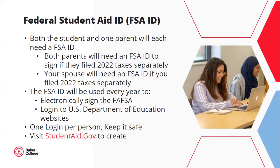One of the most important items needed to complete the FAFSA is a Federal Student Aid ID, or FSA ID. Both the student and any contributors will need an FSA ID. If parents already have an FSA ID used to complete the FAFSA for themselves or another child, they do not need to create a new one. If the student or parent doesn't have an FSA ID, please create one right away at studentaid.gov. New for the 24-25 FAFSA, an FSA ID will be required for anyone asked to provide information on a student's FAFSA. If parents filed separately, each parent will need their own FSA ID. Similarly, if an independent student and spouse filed separately in 2022, the spouse will also need an FSA ID.